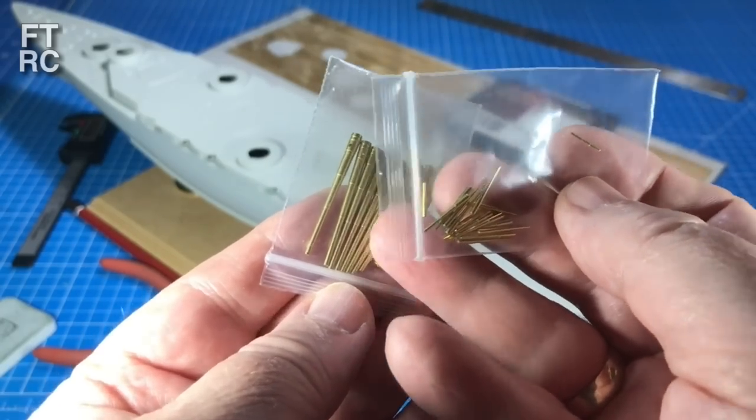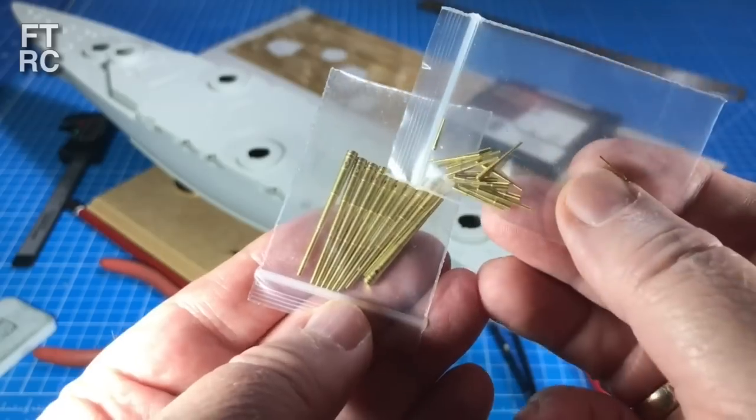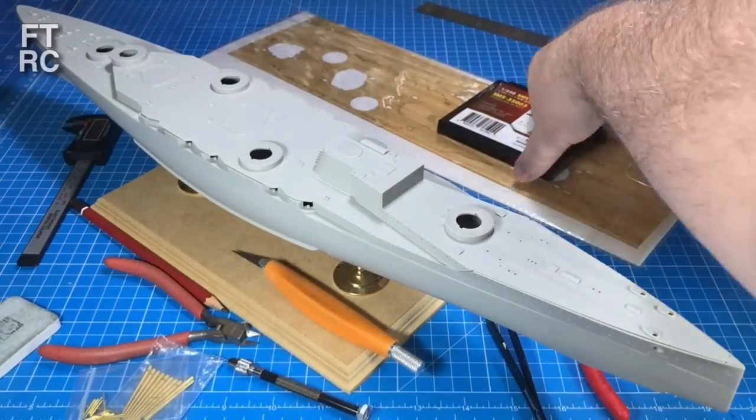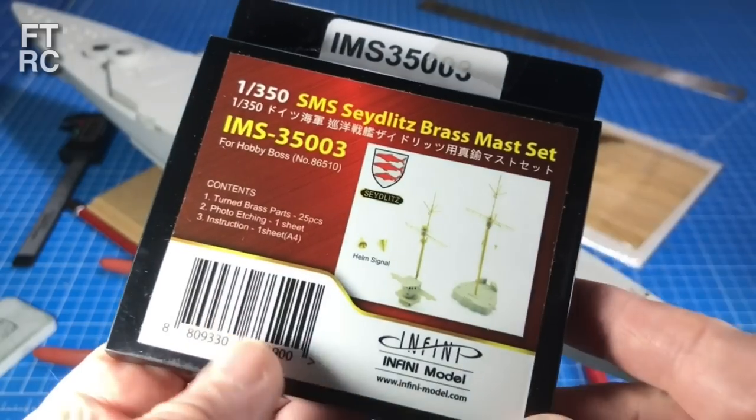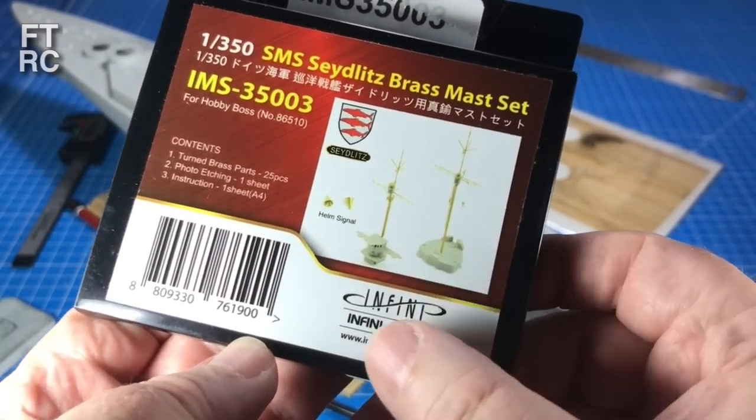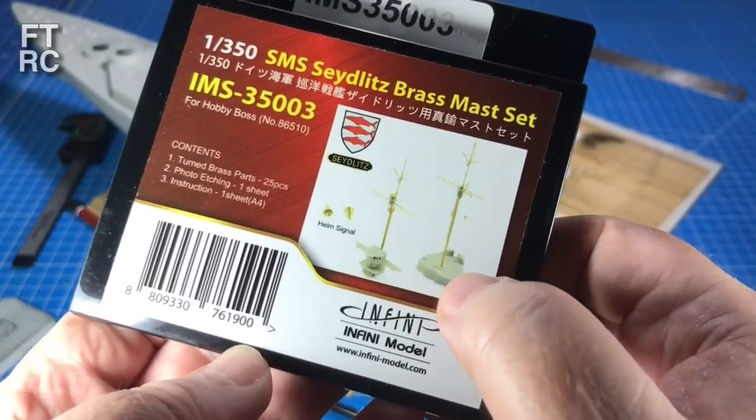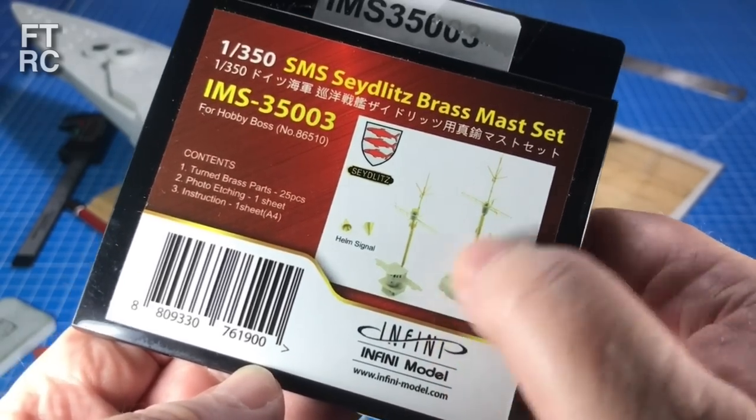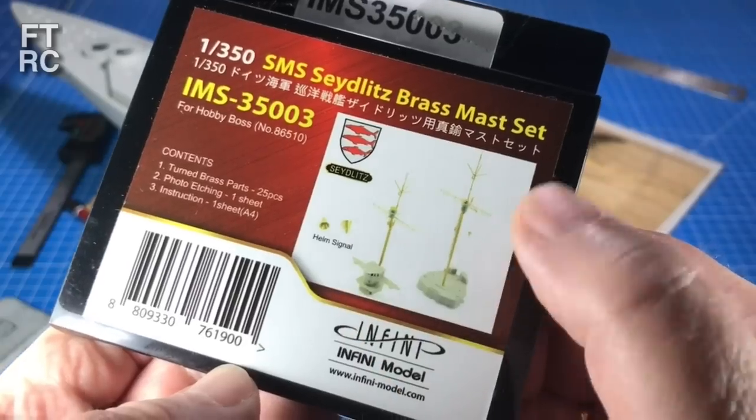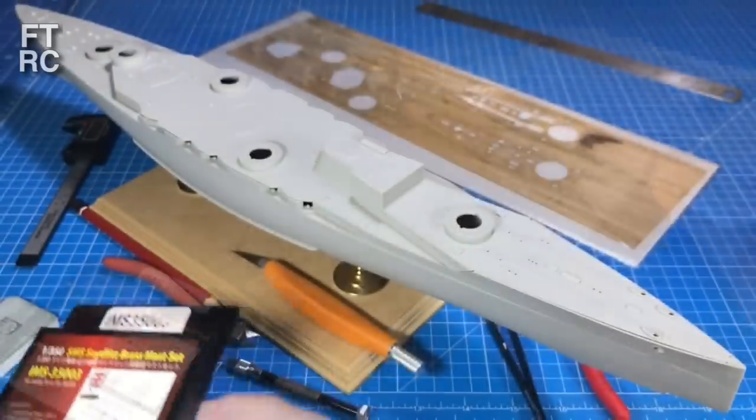These brass barrels will do the trick and they always just look that much better. I also scored this brass mast set. I did this on the Varyag, so if you want to go back and look at that series, I put a brass mast in. It really looks so much better—it's thinner, because there's no way they can get the plastic thin enough without it being so fragile. Plus, there's heaps more detail than what the kit provided.